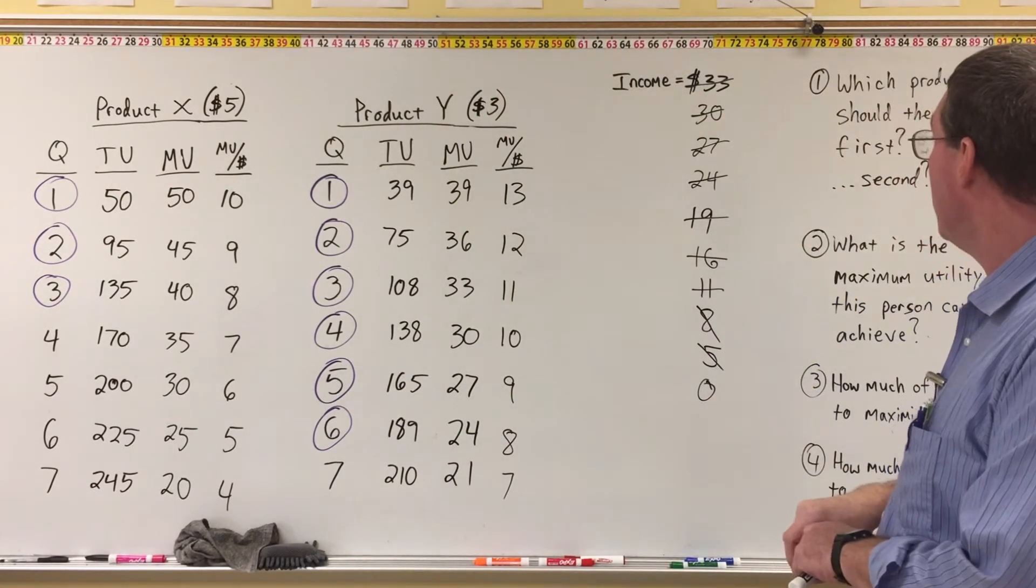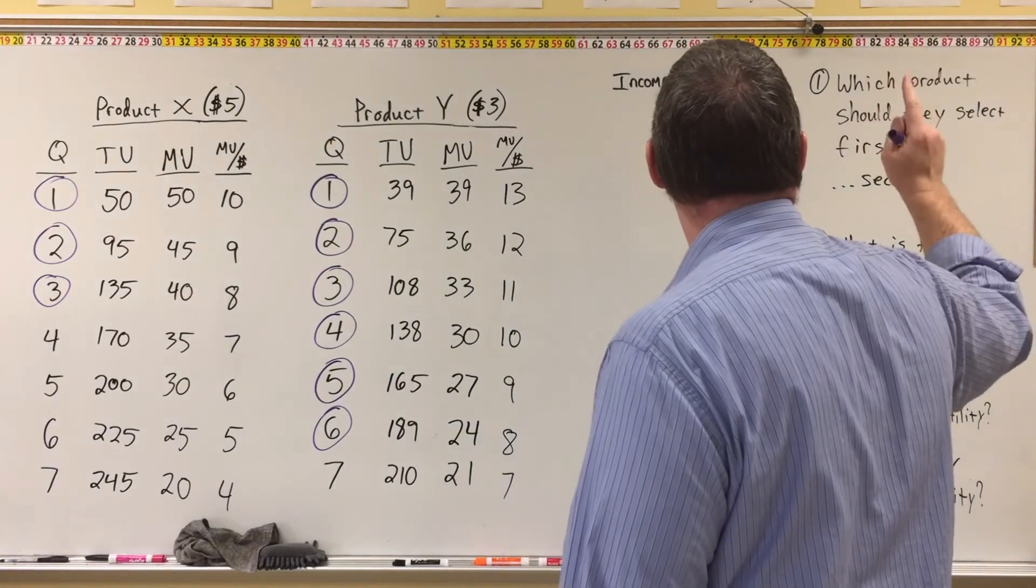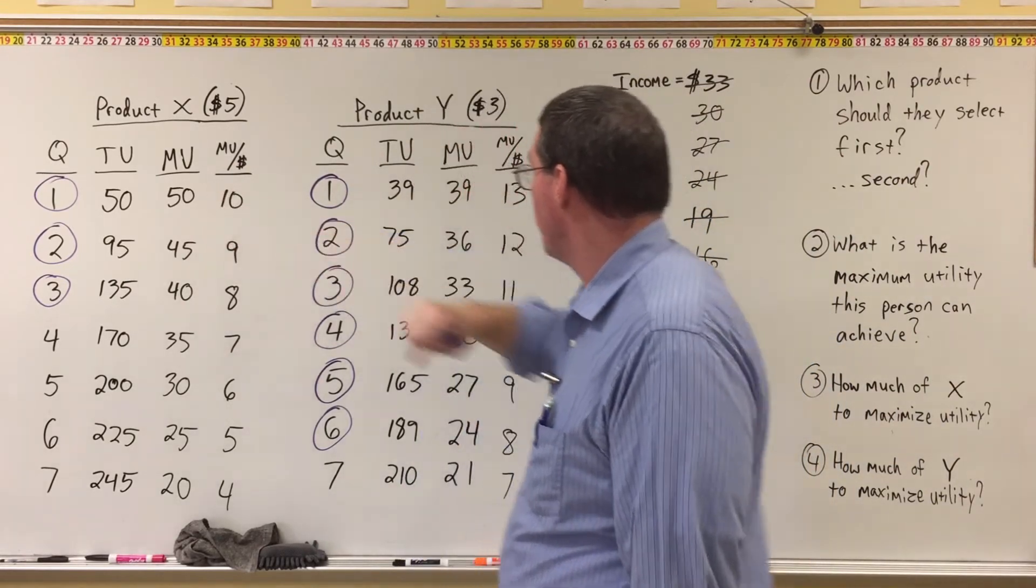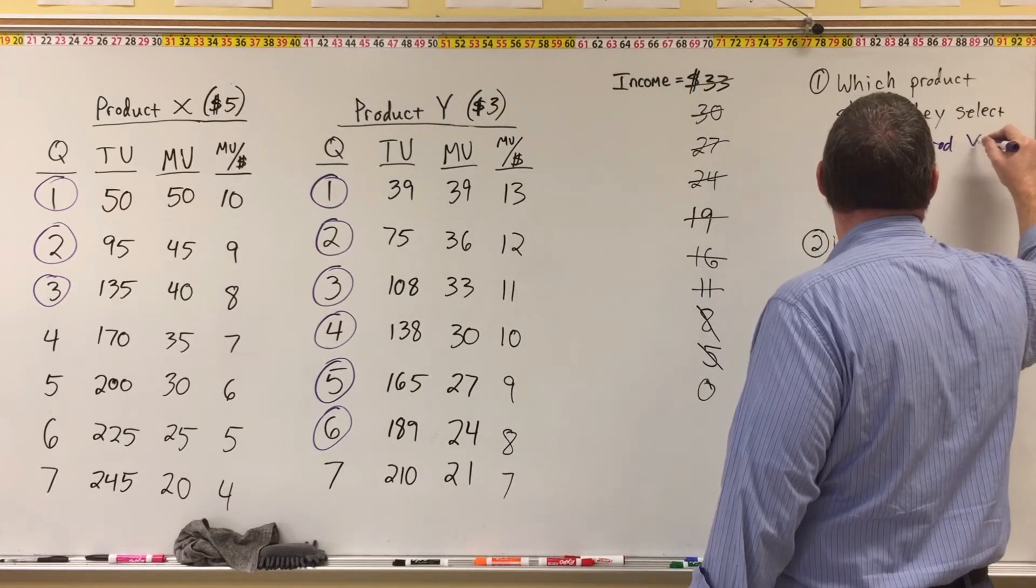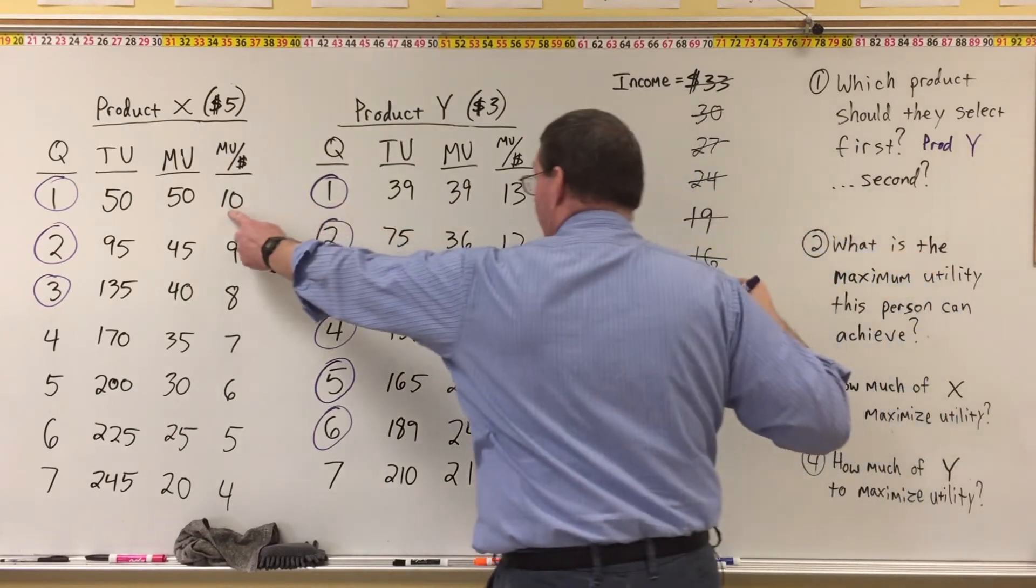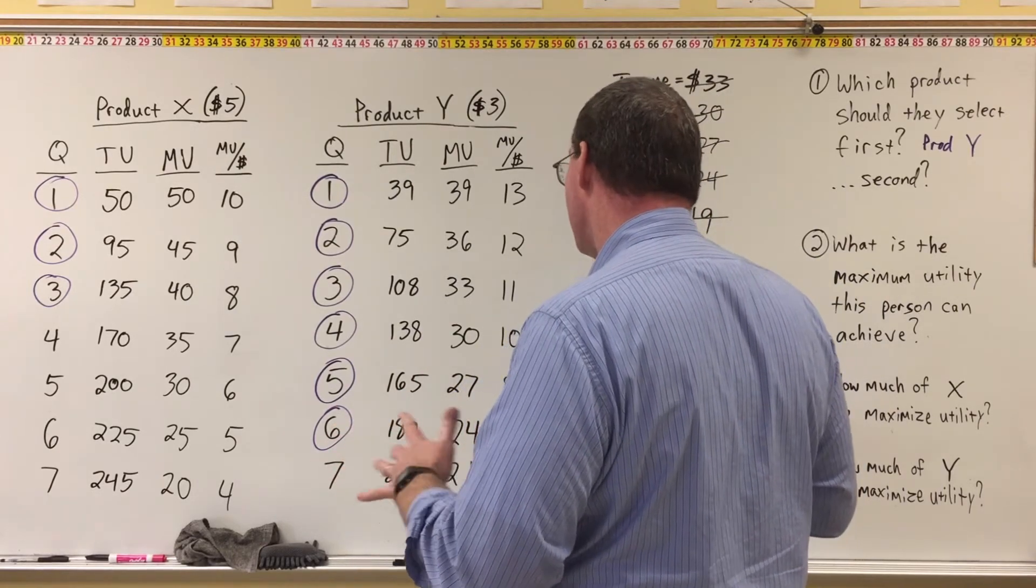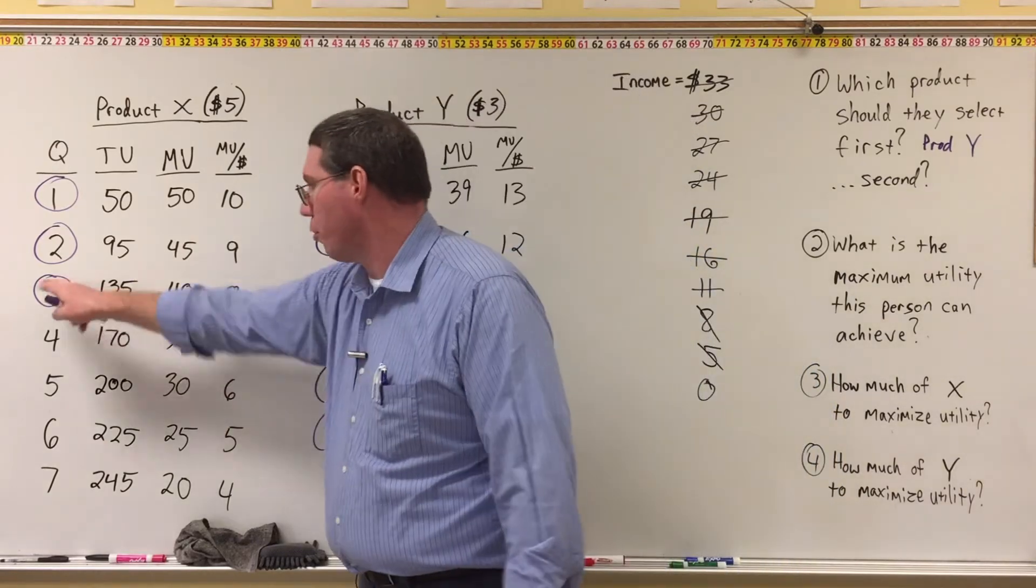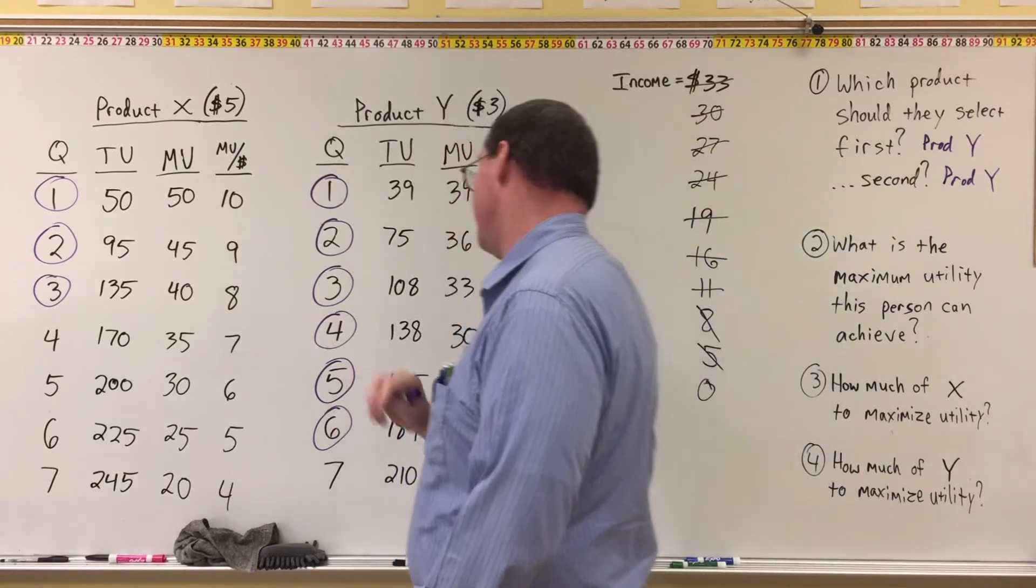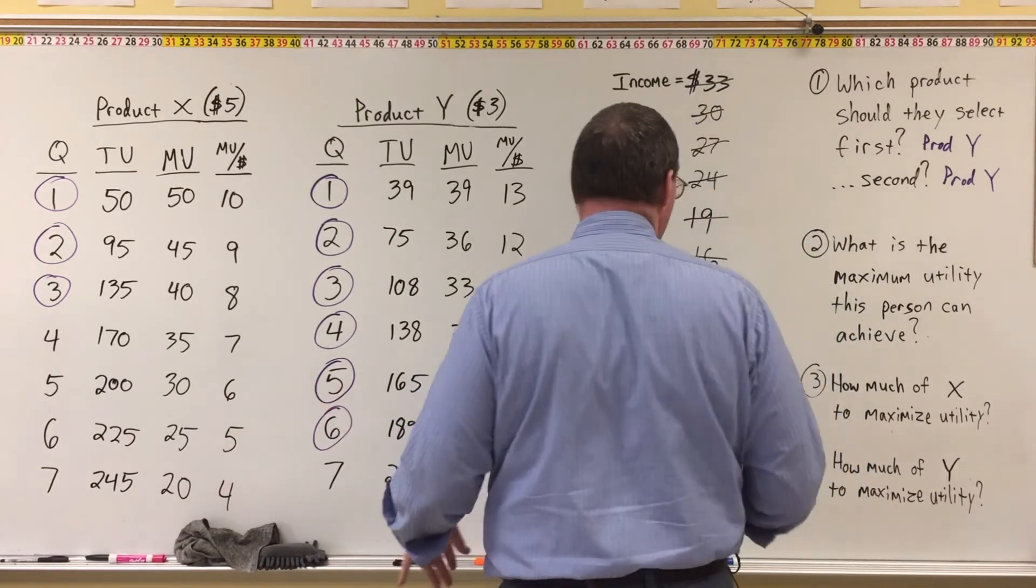So now we've spent all our money, we've got our income, our income has gone down to 0, and now we can answer our questions. The first one is, which product should they select first? The answer to that was product Y, because the marginal utility per price was higher on the first unit over here than over here, so we're going to say product Y. What should they select second? Again, it was product Y, because 12 was higher than 10. But if we were asked the question, what should they select last? Then the answer would have been, well, it could have been 6 or 3, either way would have worked. But here we'll say product Y. Depending on what you had picked, second to last. But the questions you'll see in the quiz are going to be a lot more clear. There's going to be less ambiguity, less equal numbers, fewer equal numbers.